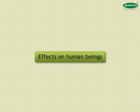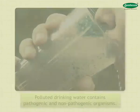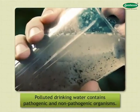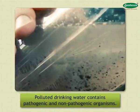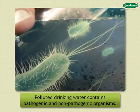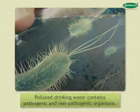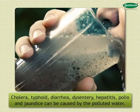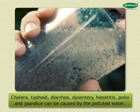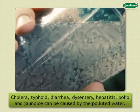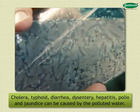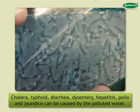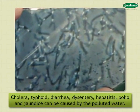Effects of Water Pollution on Human Beings: Polluted drinking water contains pathogenic and non-pathogenic organisms. Several waterborne diseases like cholera, typhoid, diarrhoea, dysentery, hepatitis, polio and jaundice can be caused by polluted water.